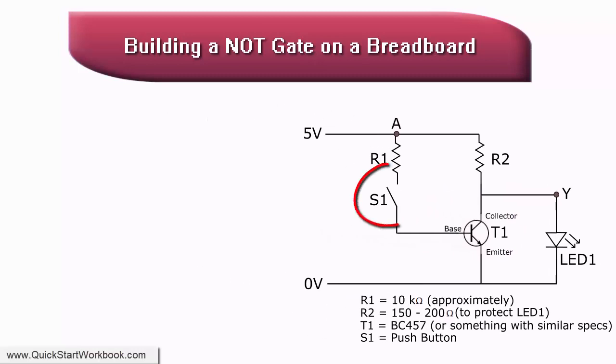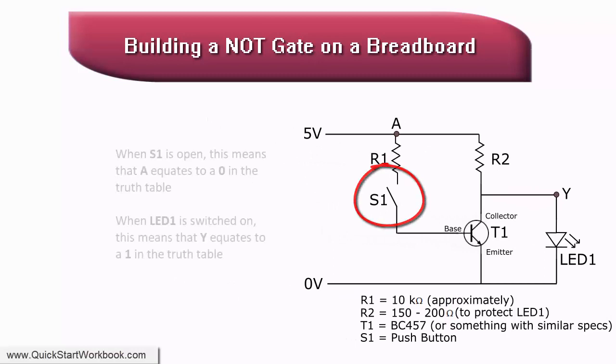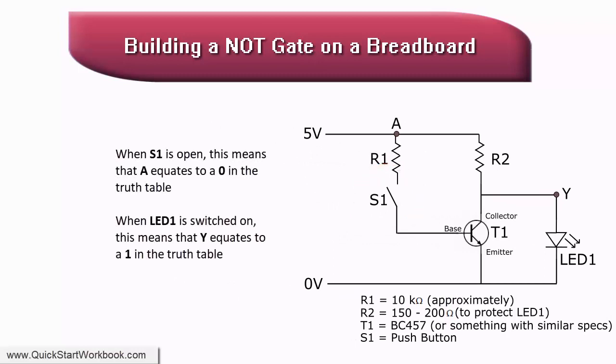The default state of the circuit is when switch S1 is open. At this point, no current is flowing to the base of transistor T1. This allows current to flow through resistor R2 and onto the LED to illuminate it.